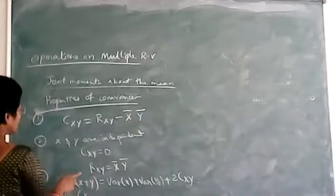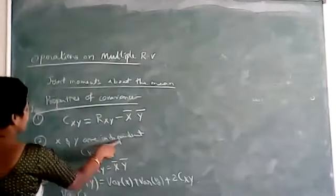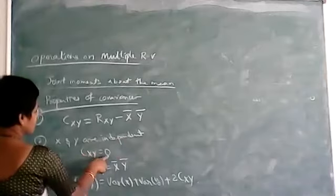The second property is if X and Y are independent, C(X,Y) is equal to 0.